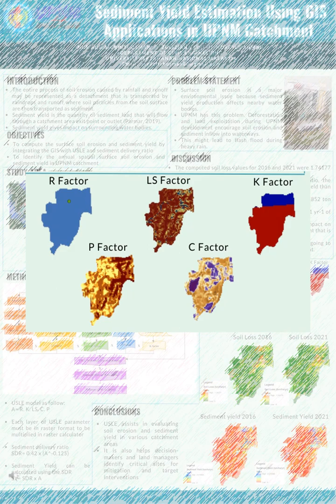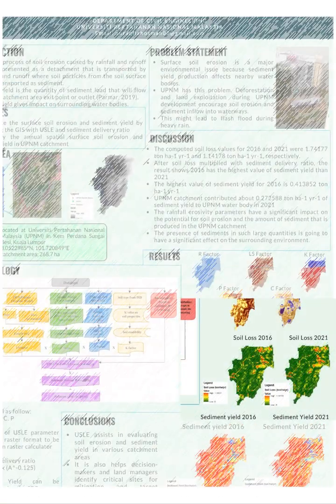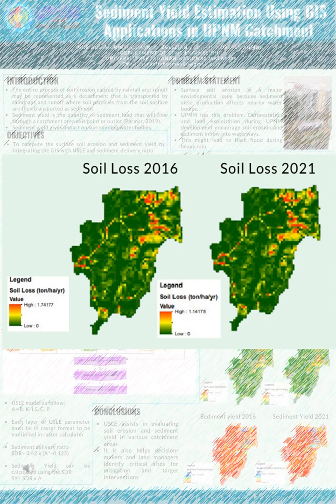All of these parameter maps will be multiplied and layered to get a soil erosion map. The determined soil loss spatial distribution was formed for two different years: 2016 and 2021. The spatial distribution of annual soil loss from 2016 shows a range from 0 to 1.74177 tonnes per hectare per year. The northeast area on the map has the highest soil erosion potential since the slope angle and steepness is high in that area. Most of the area, shown in green, has the lowest slope angle and is less likely to experience soil erosion.